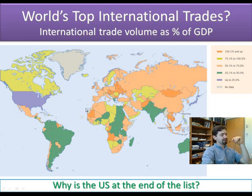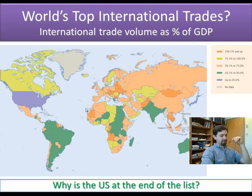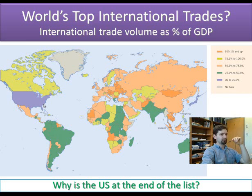Why is the United States at the bottom of the list — why doesn't the US trade as much as we'd expect given its global importance? The answer is that people in the United States trade as much as people in any other country, and goods and services do move a lot within the US and between the US and other countries. The problem is that the United States is so big that a transaction between a person in New York and a person in LA is still considered domestic.